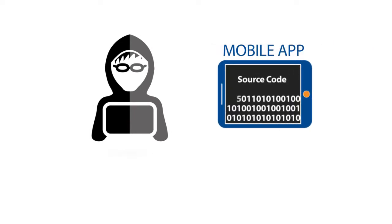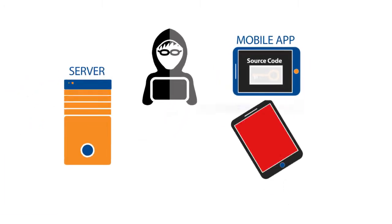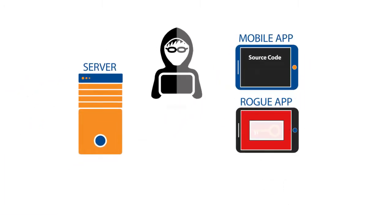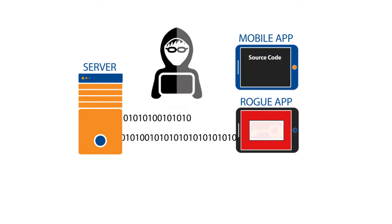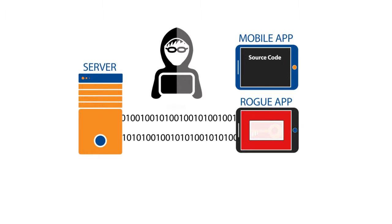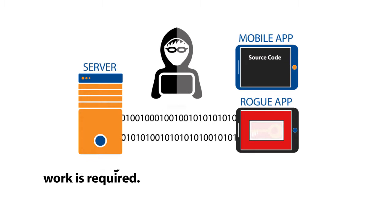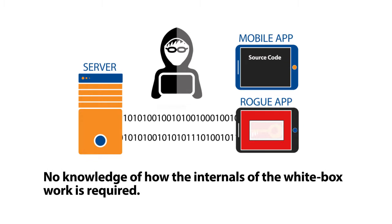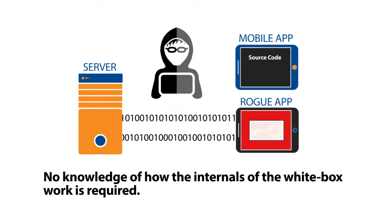However, a hacker could still decompile the original application and modify the app to lift out the entire white box software package and include it in their version of the app. This code lifting technique can be thought of as like removing the engine from one car and bolting it into another — no knowledge of how the internals of the engine work or white box is required.